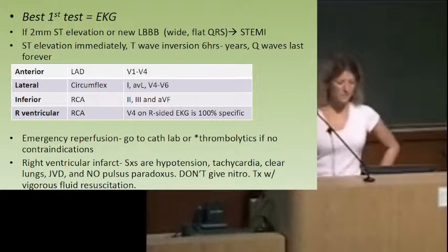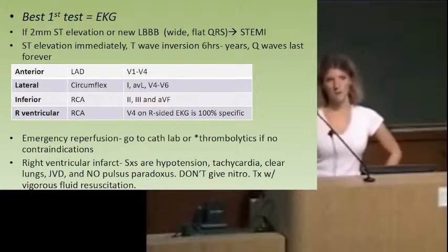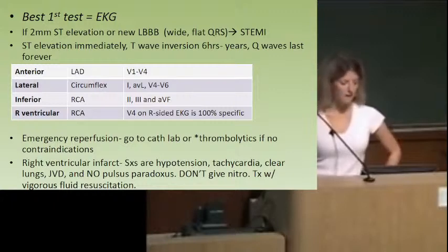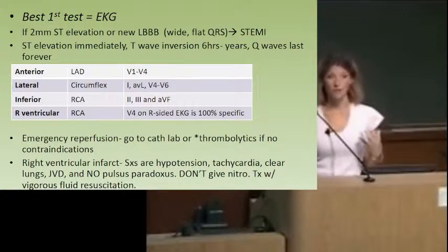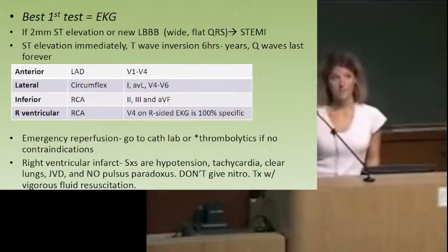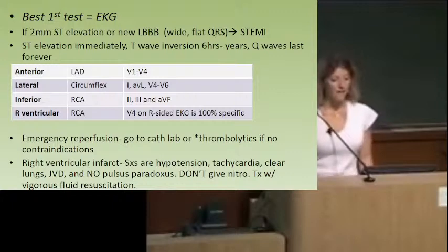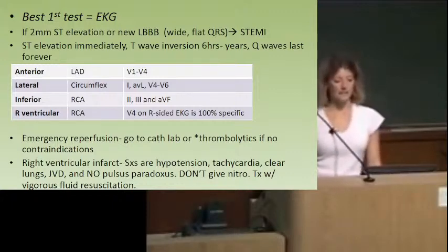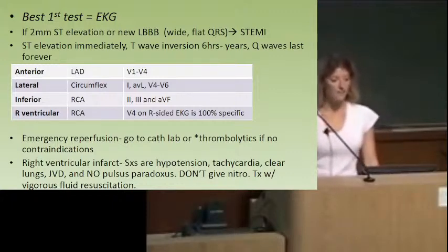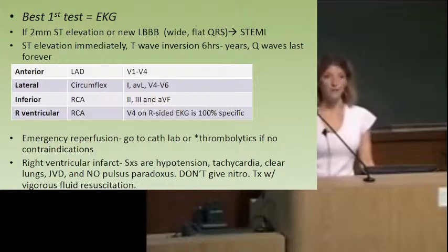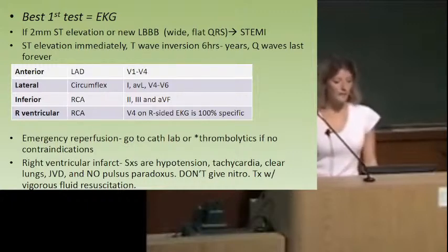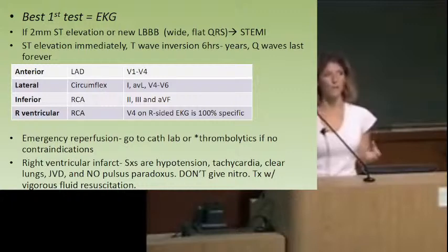Something that comes up in the Q-banks a lot is the case of a right ventricular infarction. The symptom complex is different than a regular garden-variety MI, which is why they like to ask about it. The patient has hypotension and tachycardia — they're kind of shocky. They do have JVD, but their lungs are clear. So they don't have the crackly cardiac pulmonary edema, and they also don't have pulsus paradoxus. It's a confusing clinical picture unless you're looking for it.